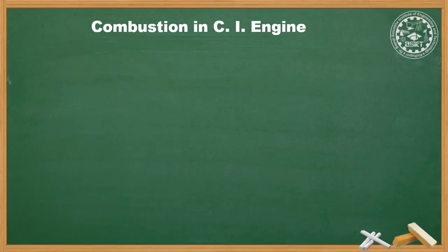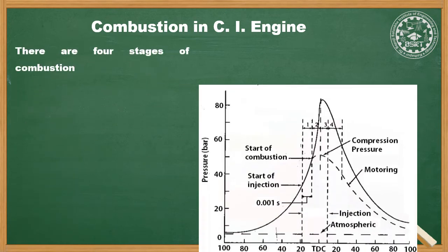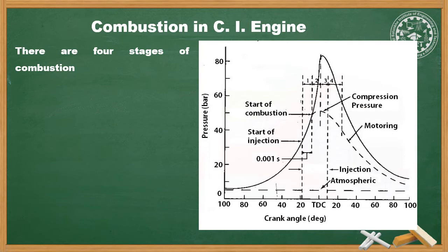Next is the combustion in CI engine. In CI engine, the fuel is sprinkled and the air is sucked by the engine. The combustion in CI engine is considered into four stages as shown in figure aside. The first stage is known as ignition delay period. During this period, the fuel has already been sucked inside the cylinder, but it has not been ignited. The period from start of injection to the point where curve separates from pure air compression. The first stage is from start of injection to the start of combustion as shown by one in the given figure.